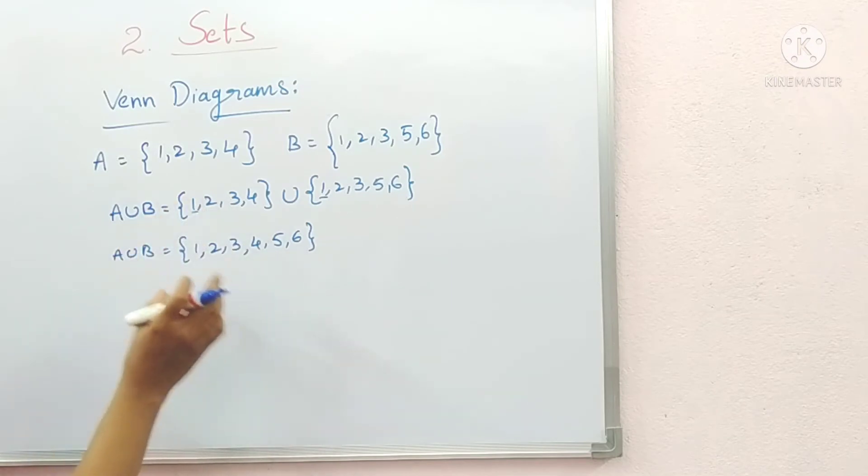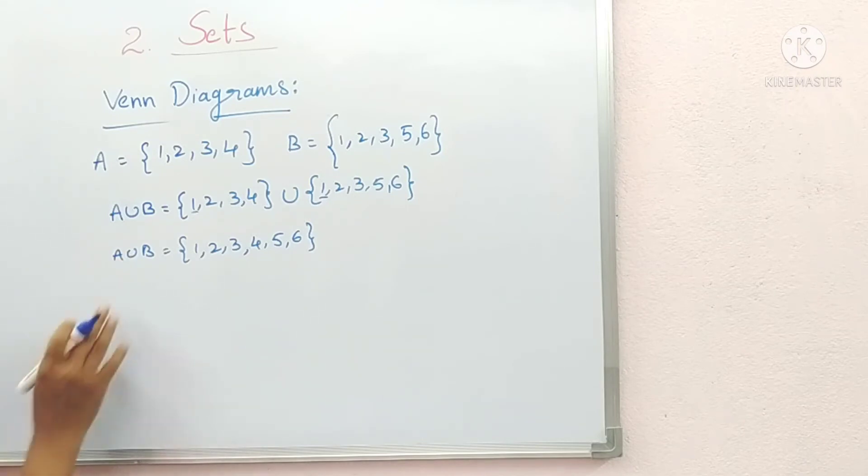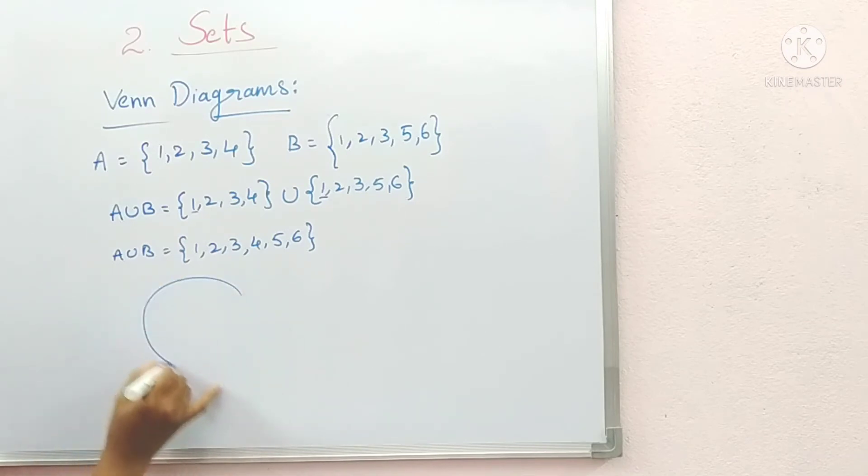Total elements in A and B. If any element is repeating, then without repetition we write only one time. This is A union B. Now we will see how we represent it in Venn diagrams.